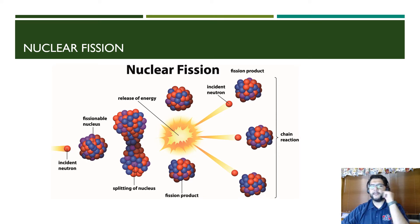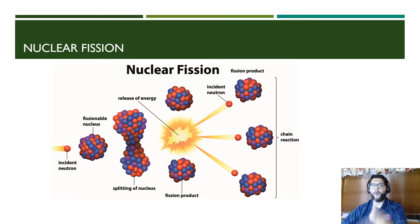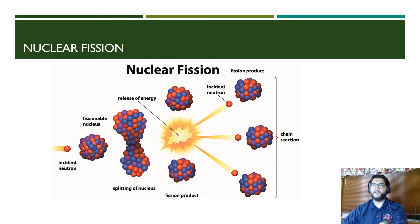That chain reaction releases a ton of energy in the form of heat. We spoke about this previously in the video about coal — how you get energy that way. Now instead of using coal to burn and create heat, we're causing that heat to start with a nuclear reaction.